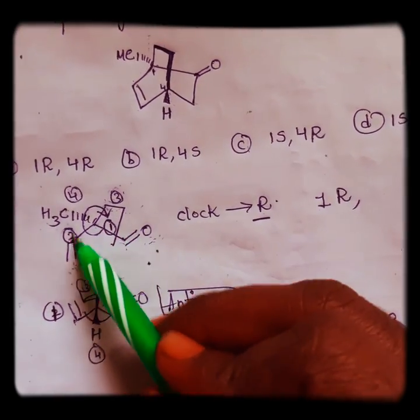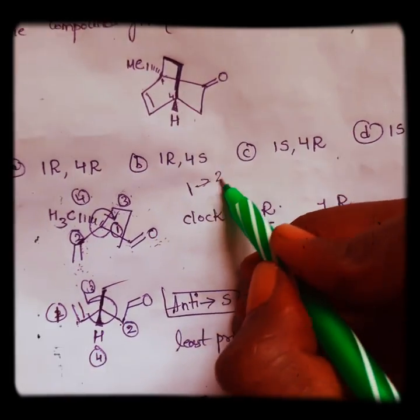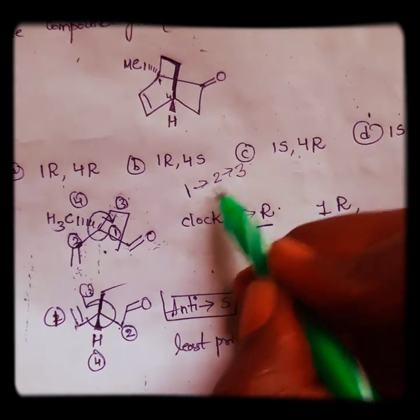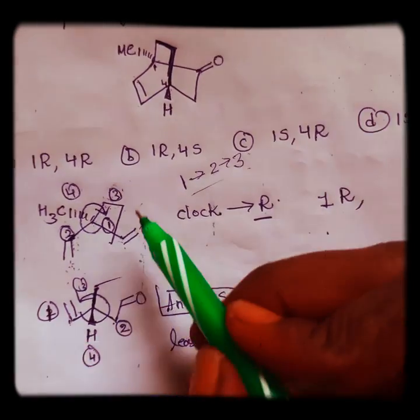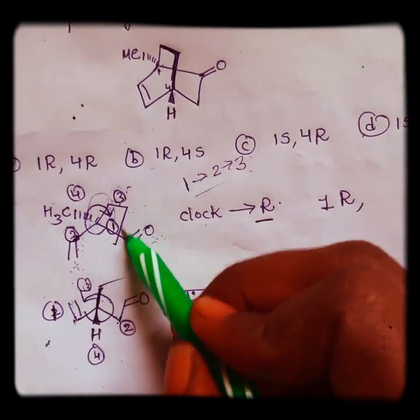So we have to draw these numbers based on this, one, two, three. When we draw this model, we get it correct. So one, two, three - this is clockwise direction, so clockwise means R.